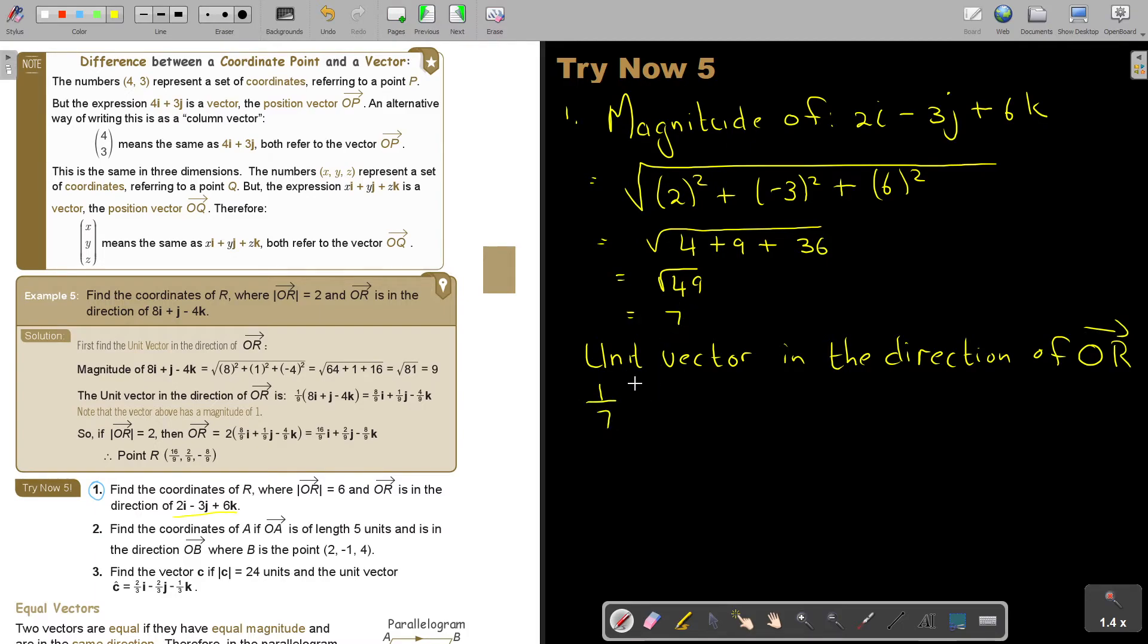So it's 2I minus 3J plus 6K, and that is going to be 2 over 7I minus 3 over 7J plus 6 over 7K.